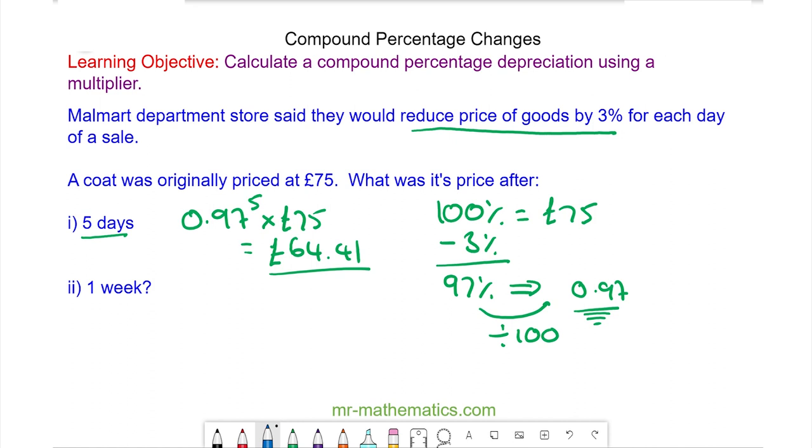The price after one week is the same multiplier of 0.97. This time raised to a power of 7, seven days in a week. Multiplied by the original £75 and we have £60.60.